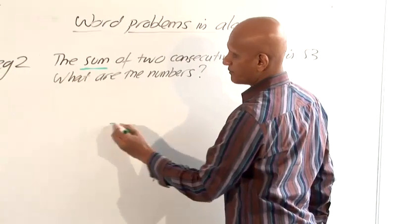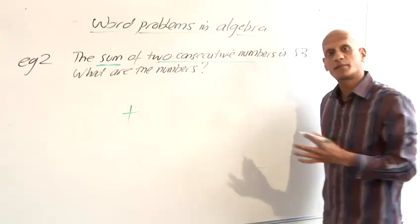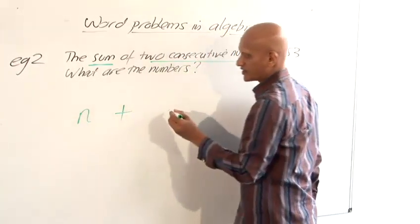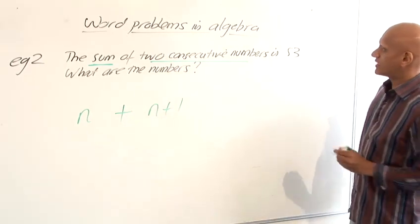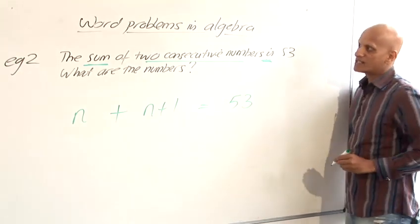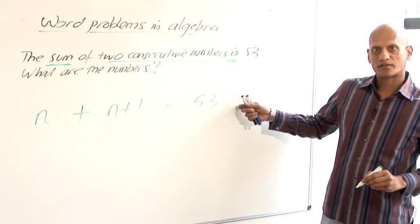The sum means plus. And two consecutive numbers, we said before, consecutive numbers, well one of the numbers might be called n, in which case the other number would be called n plus 1. So the sum of two consecutive numbers is, is equals and then 53. So now we've converted the question which was written in English into a mathematical equation.